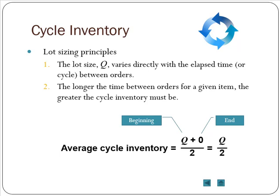At the end of the cycle, we have zero. Then we immediately receive the next order, Q again. So at the beginning, we have Q units; at the end, we have zero units. Over the entire cycle, the average cycle inventory level is Q divided by 2.